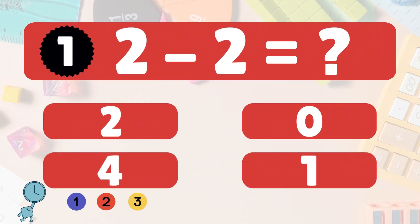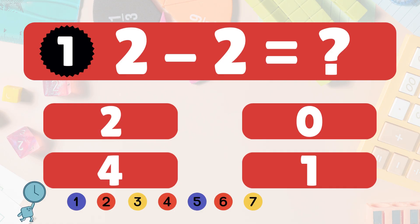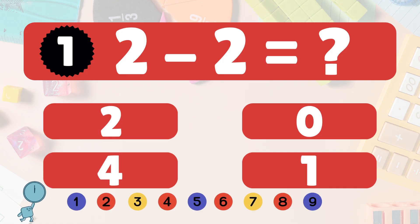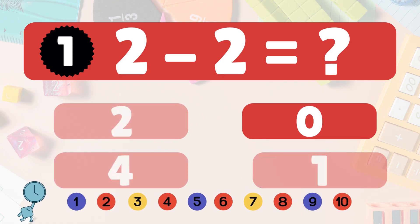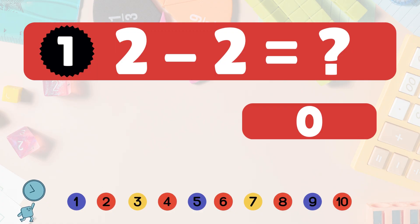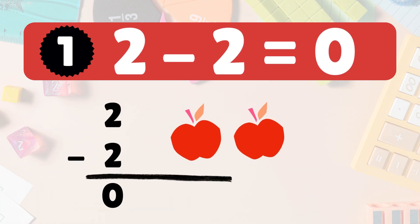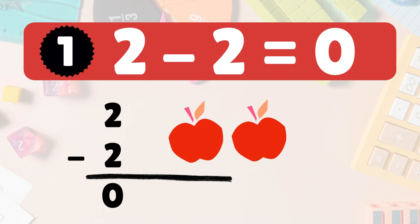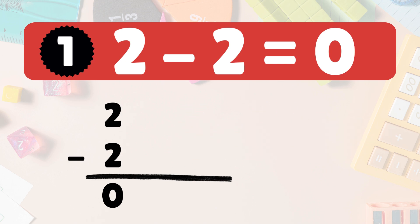2 minus 2 equals what? 2 minus 2 is 0. Here we have 2 apples. Take 2 away — no apples left. So 2 minus 2 is 0.